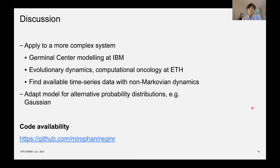And finally I'd be very interested in finding available time series data that are more complex or more complex data sets with more complex dynamics that are non-Markovian. So I'd be very happy if anyone has suggestions as to any data sets that are available out there. And then it'd be very useful to adapt the model for a different target distribution, for example the Gaussian distribution.